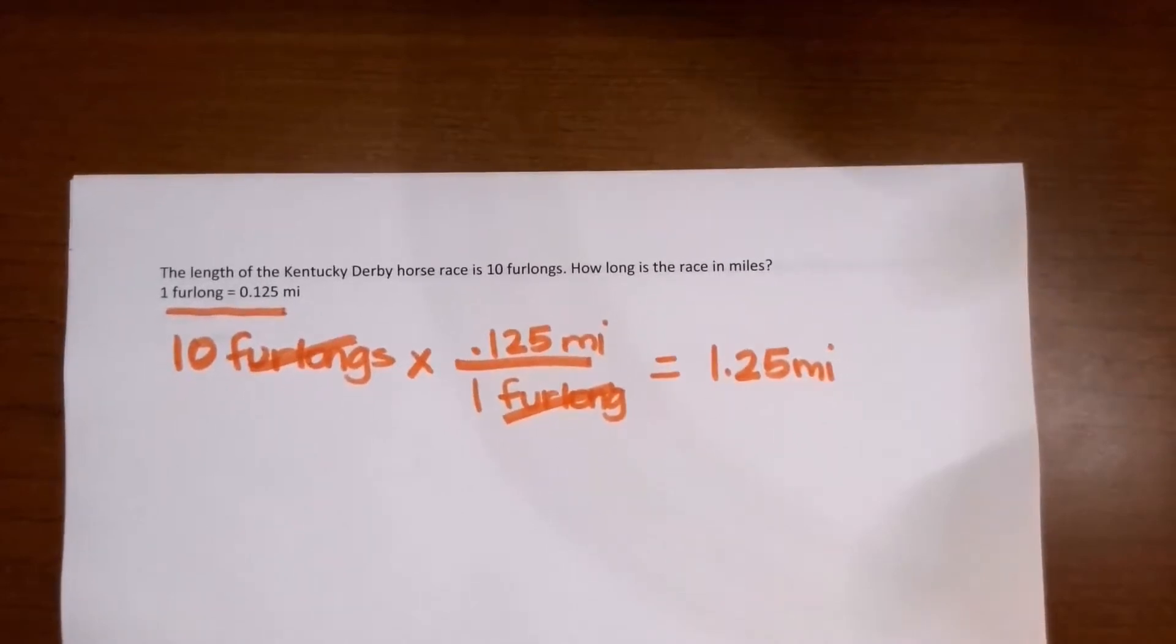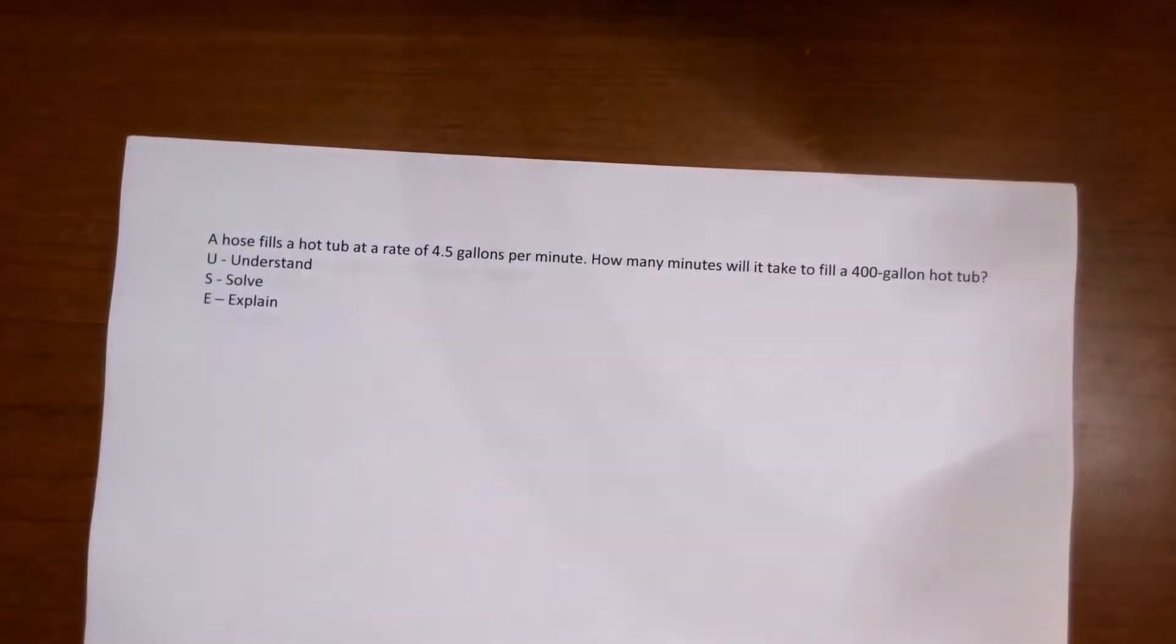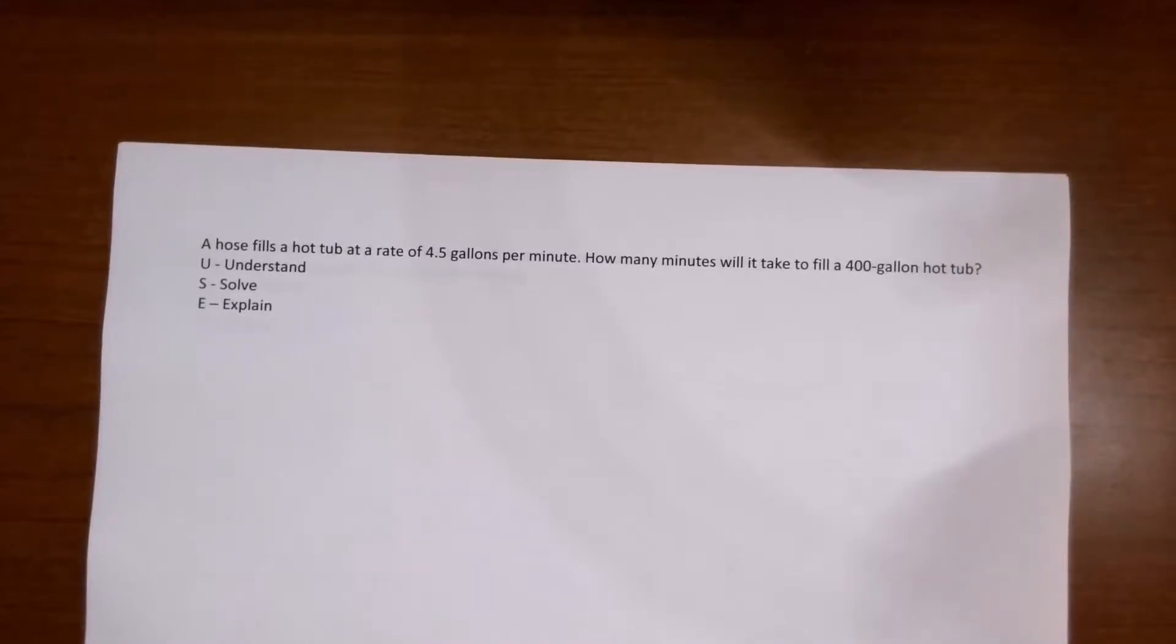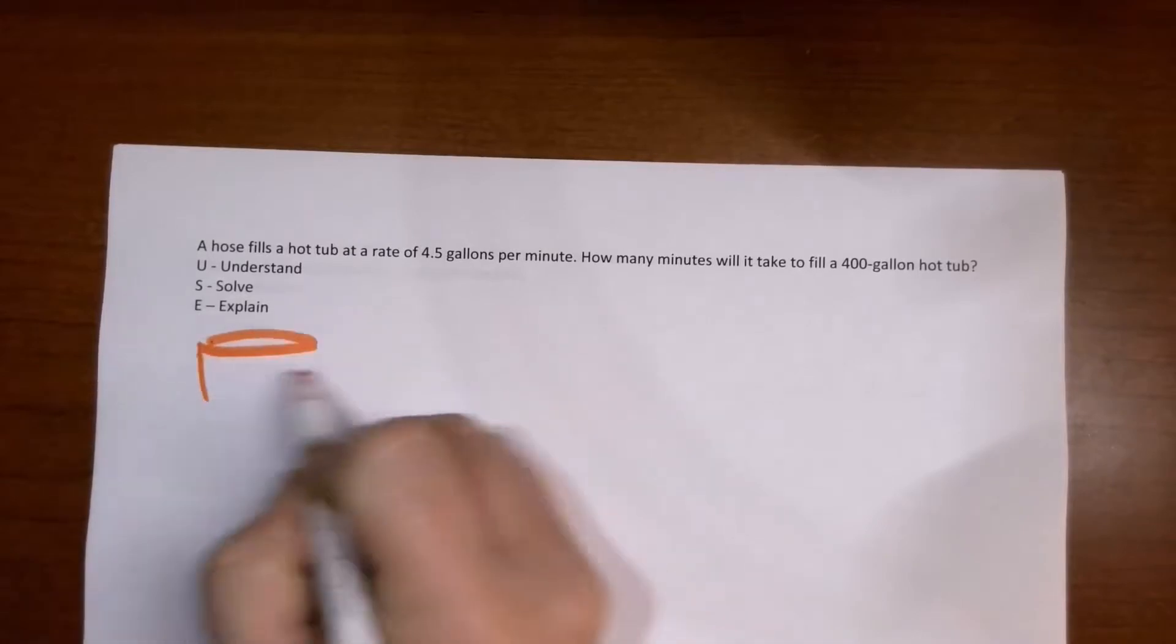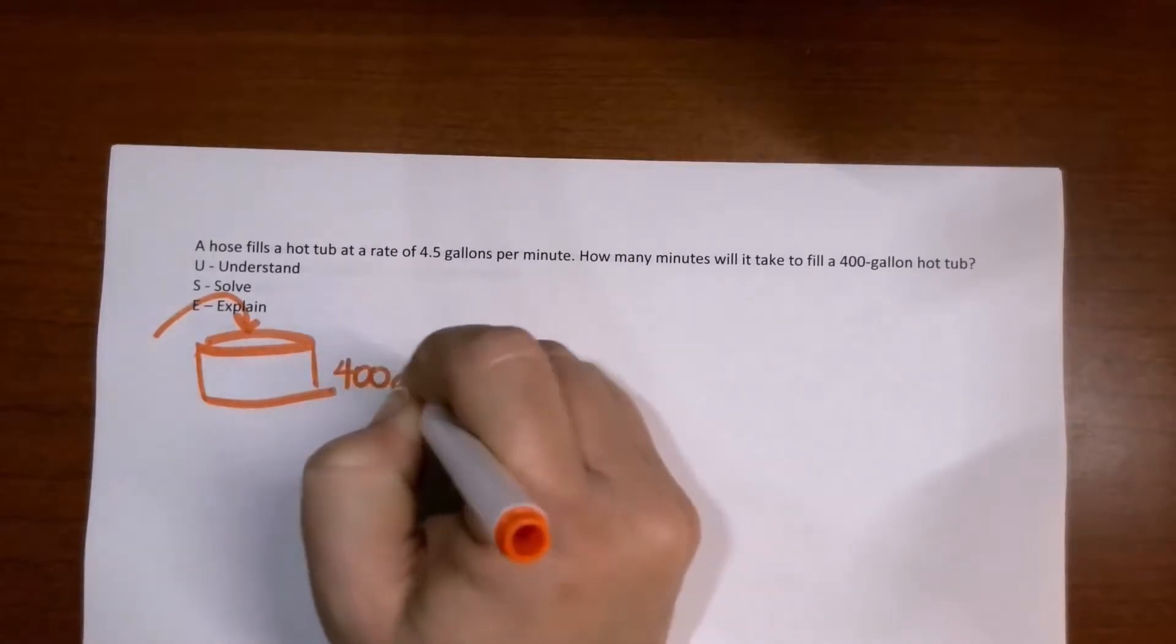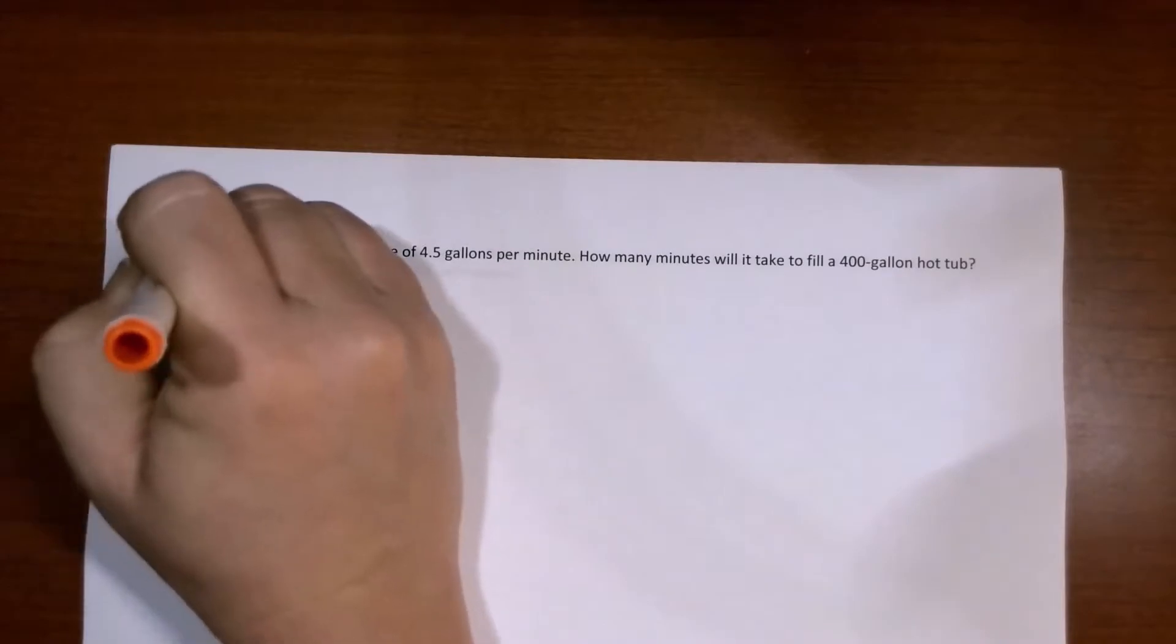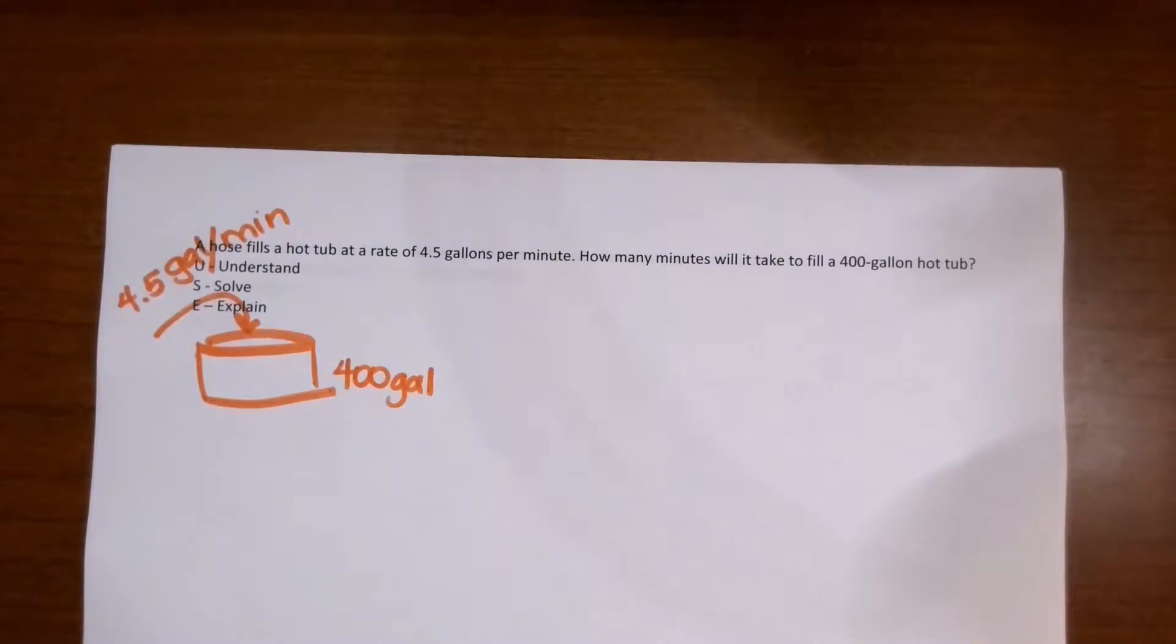One more example. A hose fills a hot tub at a rate of 4.5 gallons per minute. How many minutes will it take to fill the 400-gallon hot tub? So I'm just going to draw a little picture here. Simple hot tub. That's going to be my water going in. So this is 400 gallons. And then that water is coming in at 4.5 gallons per minute. Now I've shown this little picture to help me understand.